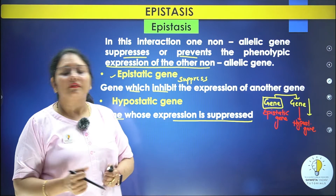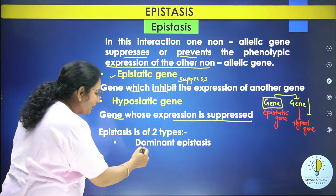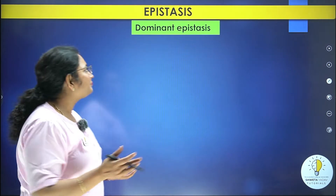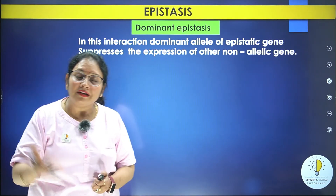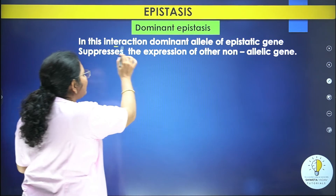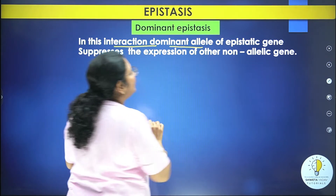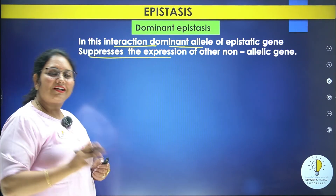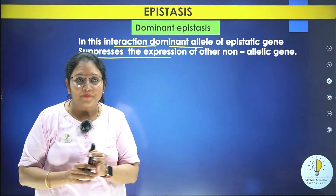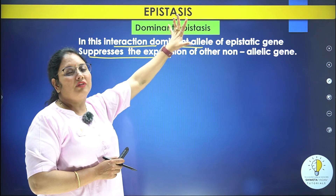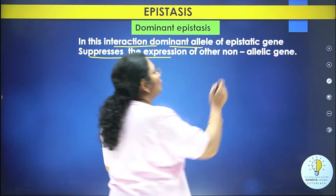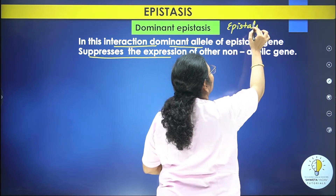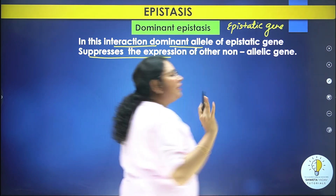Now when we talk about epistasis, it is of two types: dominant epistasis and recessive epistasis. We will first discuss dominant epistasis. In dominant epistasis, the dominant allele of the epistatic gene suppresses the expression of another non-allelic gene. Simply put, dominant epistasis is the condition where the epistatic gene is present in its dominant form.